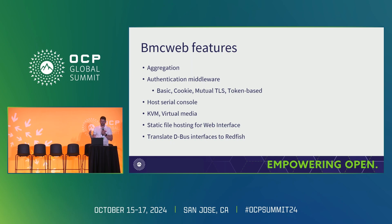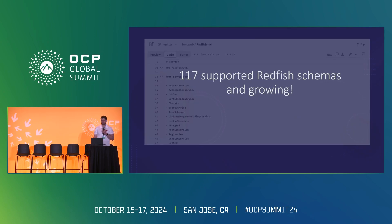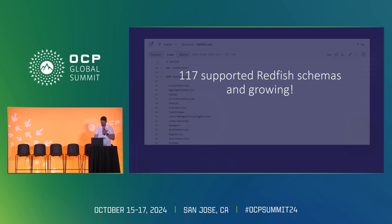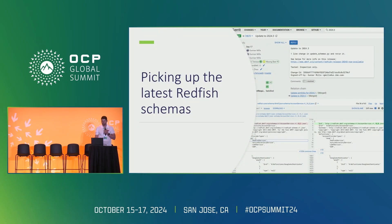BMC Web translates DBUS, our inter-process communication, to Redfish and back. BMC Web today supports 117 Redfish schemas, hundreds of properties, and it's a growing list. The full list can be found in BMC Web. BMC Web tends to consume Redfish schemas when they become available — this is us picking up 2024.3 just a few days after it was available. 2024.3 had things like some additional multi-factor auth properties that we're using.